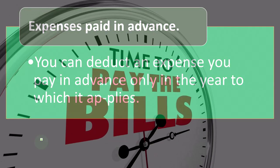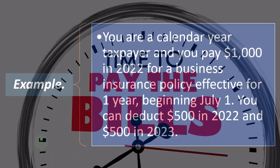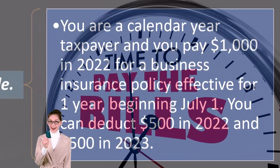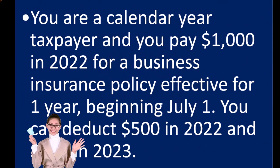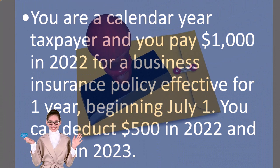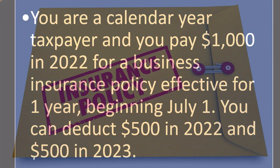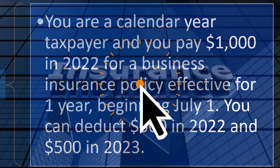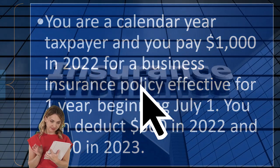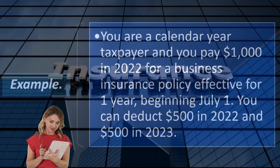Expenses paid in advance: you can deduct an expense paid in advance only in the year to which it applies. For example, if you are a calendar year taxpayer and pay $1,000 in 2022 for a business insurance policy effective for one year beginning July 1st, you can deduct $500 in 2022 and $500 in 2023. Insurance is the prime example — you're being required to apply an accrual concept even on a cash-based system.